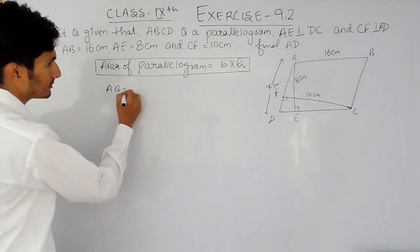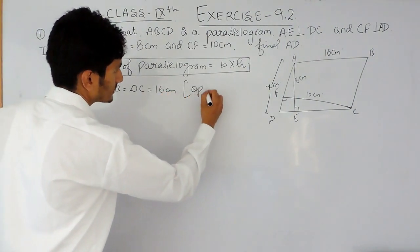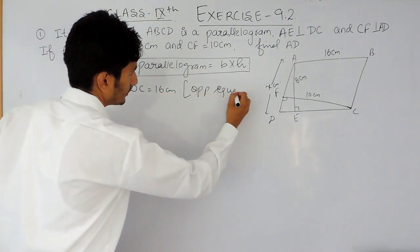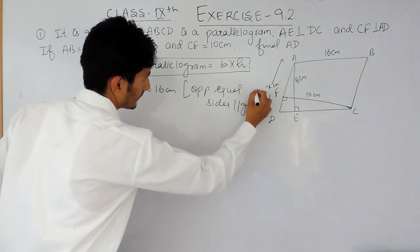AB must be equals to DC and that is equals to 16 cm. Opposite sides of a parallelogram are equal.